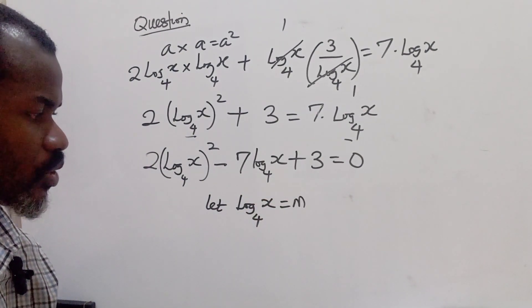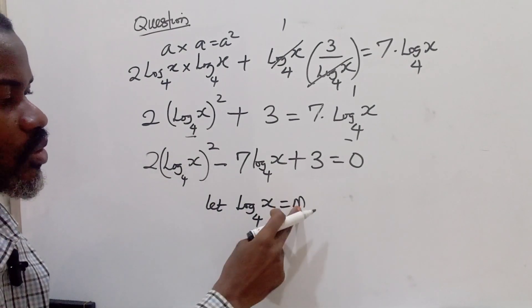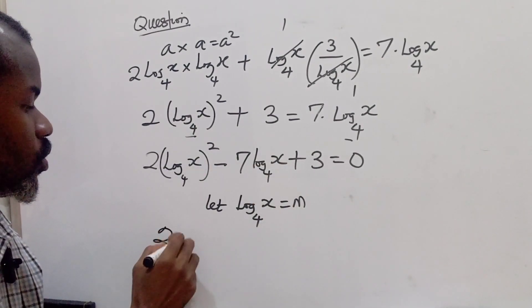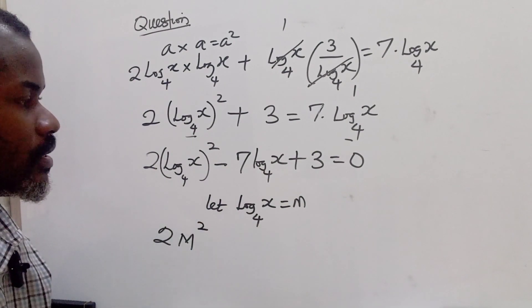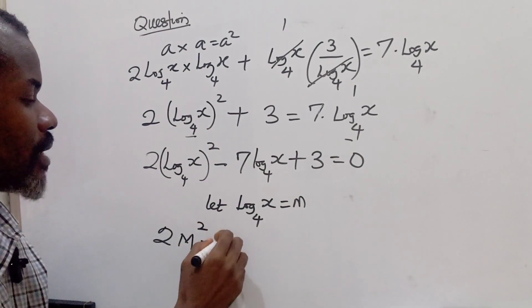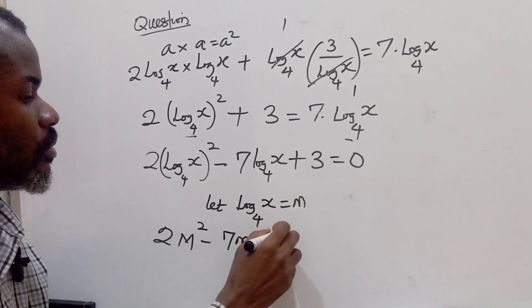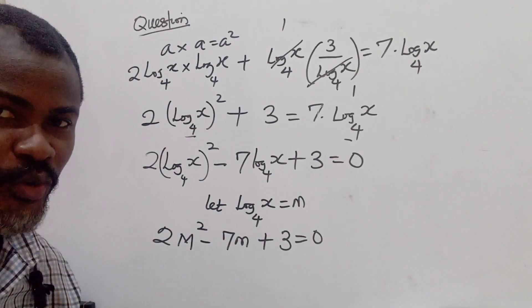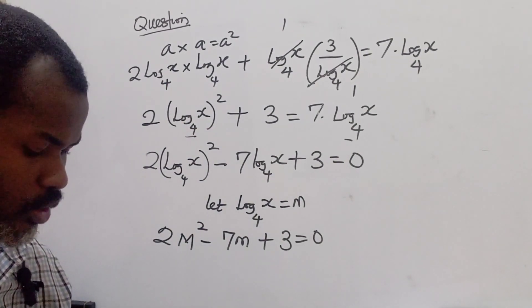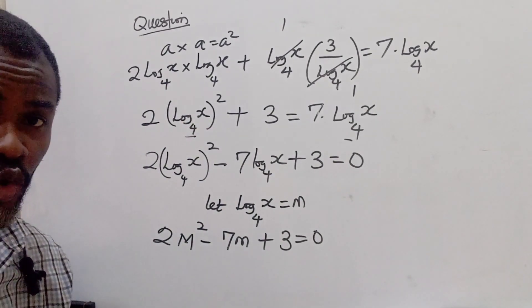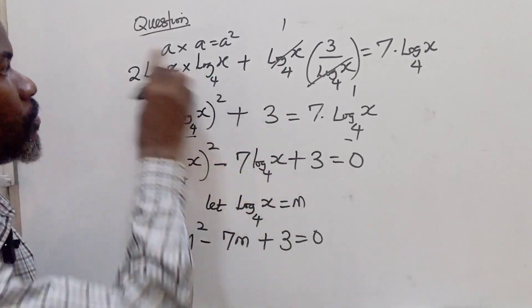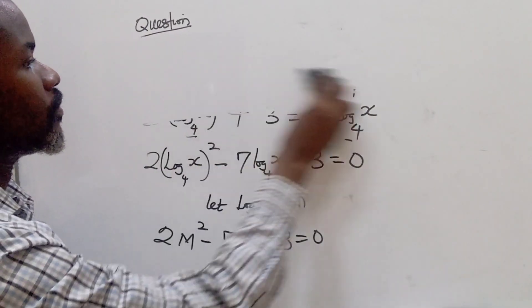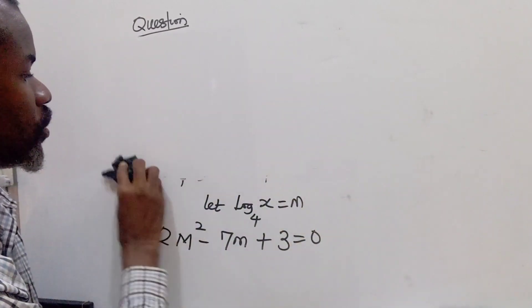To solve this as a quadratic, let n = log x base 4. Substituting, the equation becomes: 2n² minus 7n plus 3 equals 0. We now have a standard quadratic equation in n.